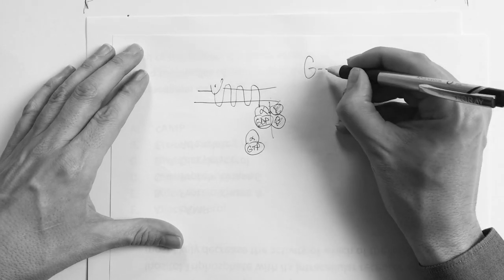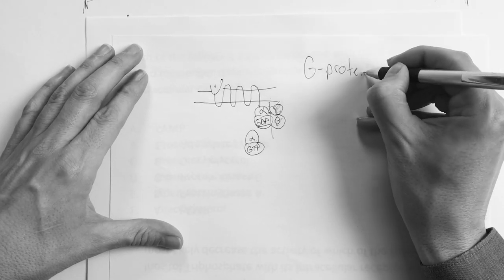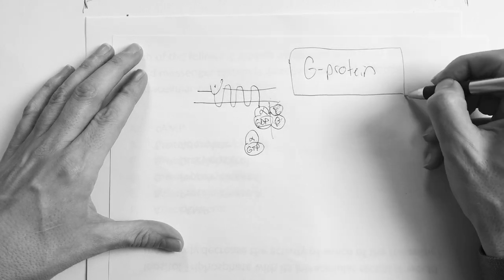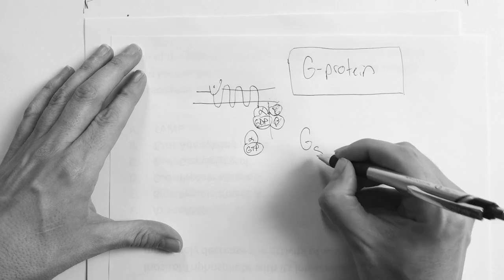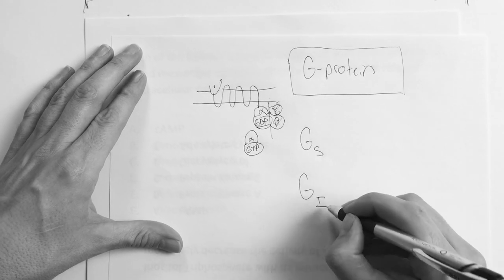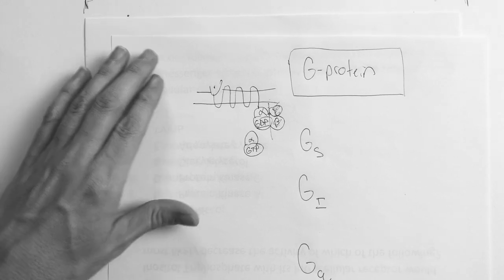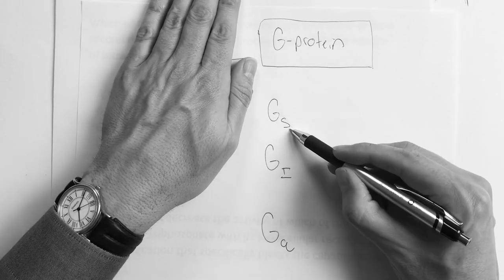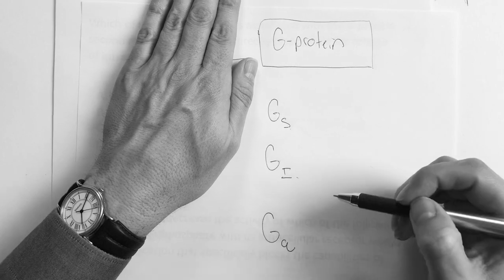With G protein, there are three types — and you see this all over your Step book: G-stimulatory, G-inhibitory, and G-Q. Just three types. Think of it like this: G-stimulatory, G-inhibitory, and G-Q.